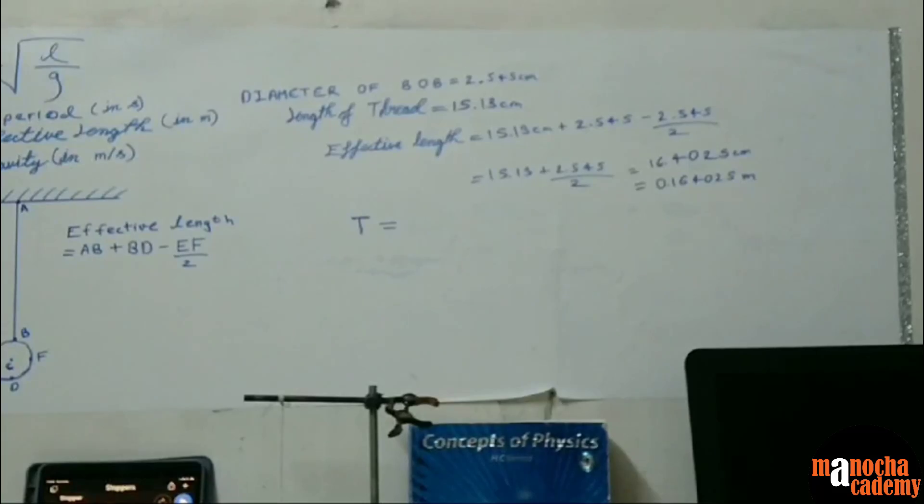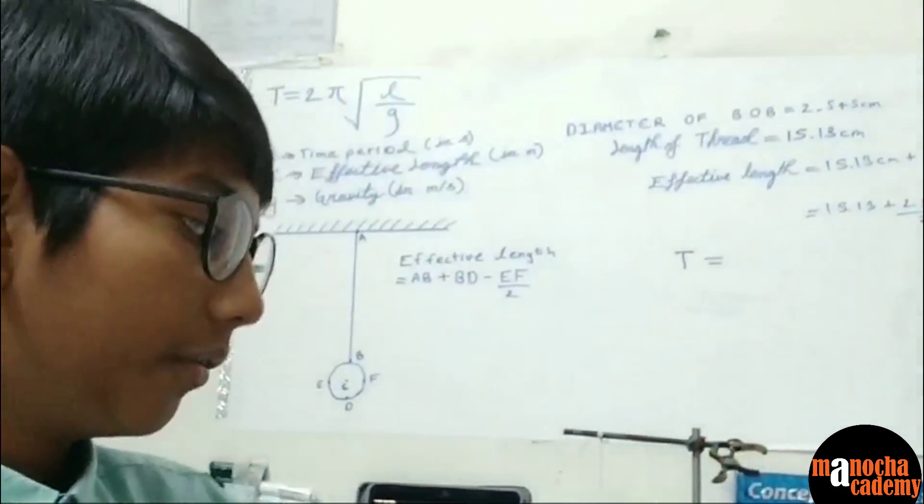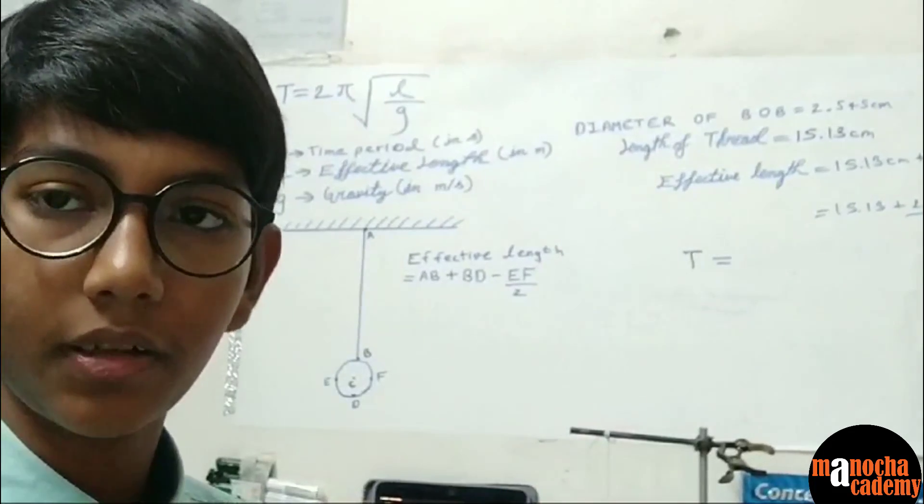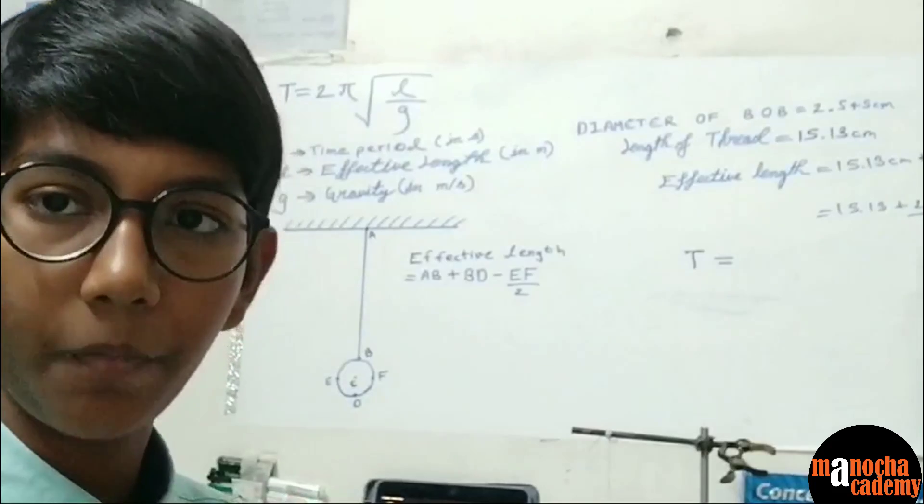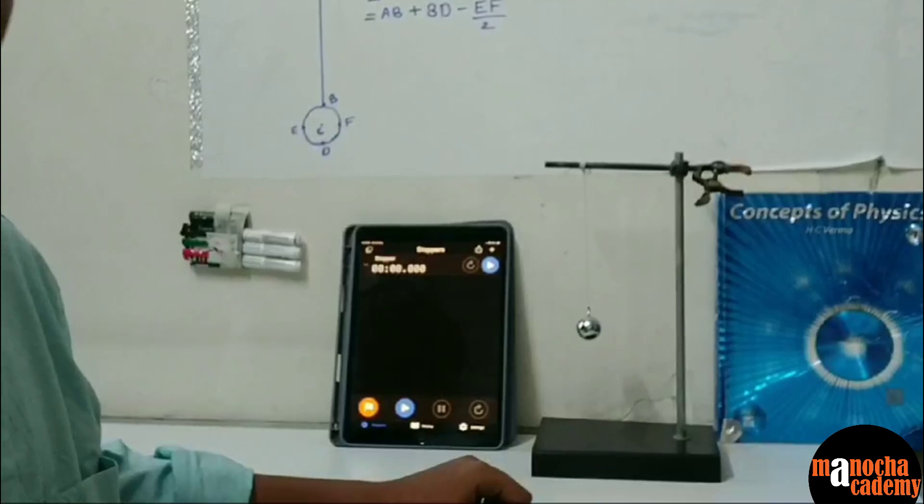So we now have the effective length. The next step is to find the time period. We can find the time period by finding the time period of 10 oscillations and then dividing that time period by 10. Now we will measure the time period for 10 oscillations using a stopwatch.